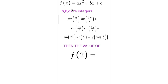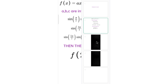The question is: f(x) = ax² + bx + c, where a, b, c are integers, so f(x) is a quadratic equation. The second condition given is sin(π/7)·sin(3π/7) + sin(3π/7)·sin(5π/7) + sin(5π/7)·sin(π/7) = f(cos(π/7)). This means when I substitute cos(π/7) into the quadratic equation I get that value as the result. We need to find the value of f(2).